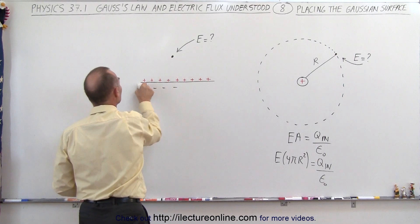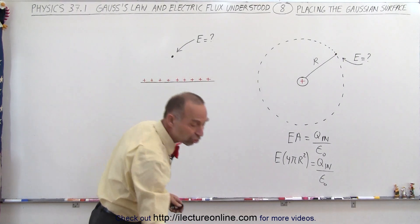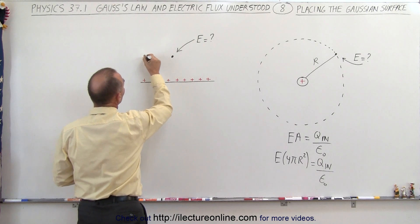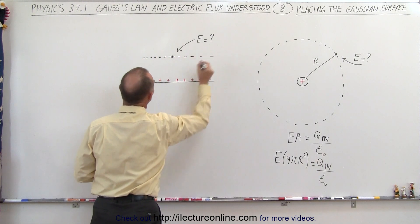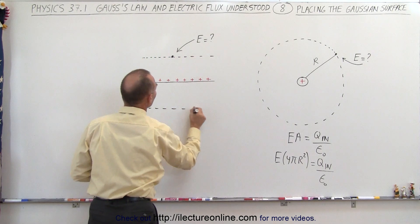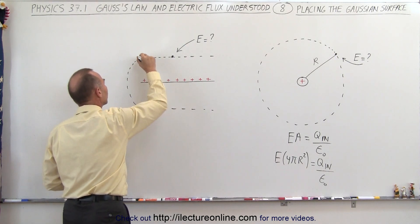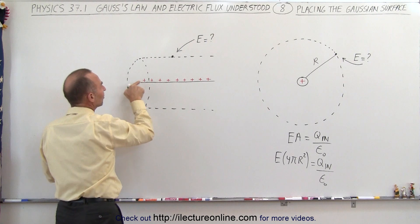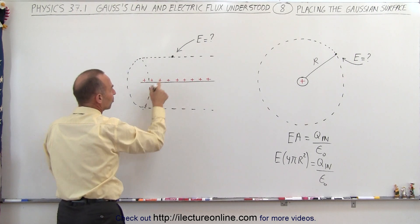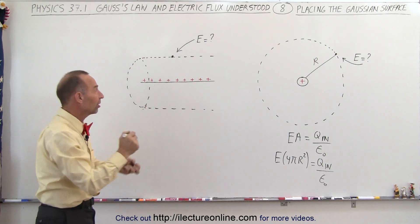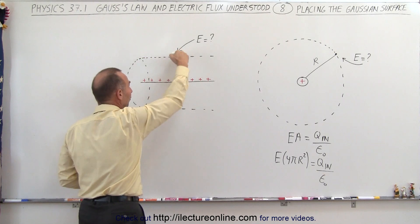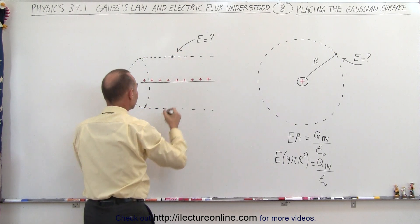Instead, what we need to do is draw a cylindrical shaped Gaussian surface, in such a way that the edge of the cylinder will go right through the point where we want to know the strength of the electric field. And so this is what it would look like in the front. We can see here that the charge distribution is right smack in the middle of the cylinder, but the edge, the surface, must be right where we want to know the strength of the electric field.